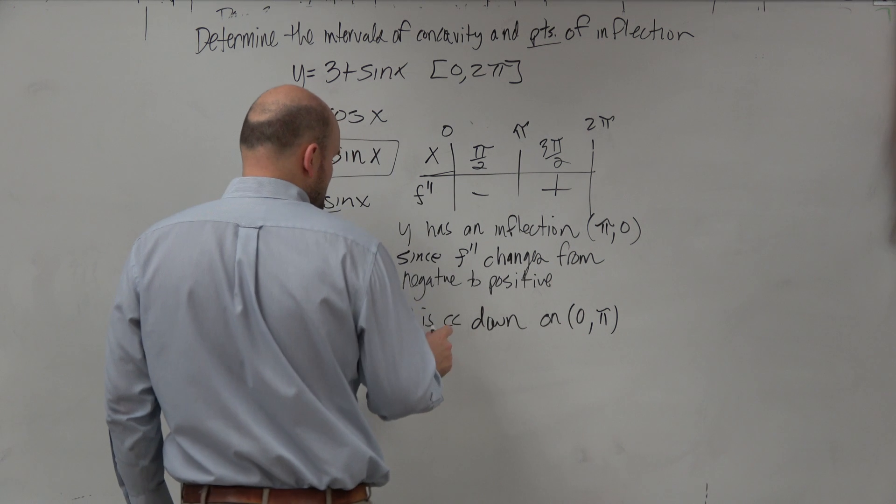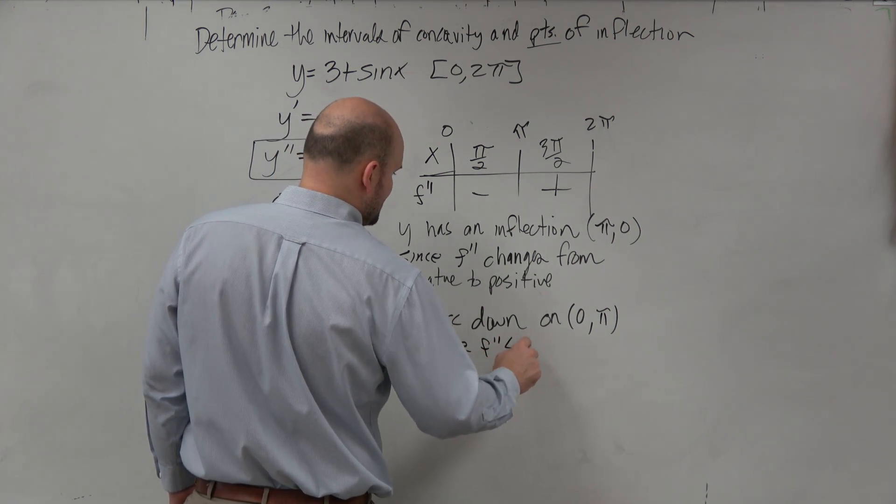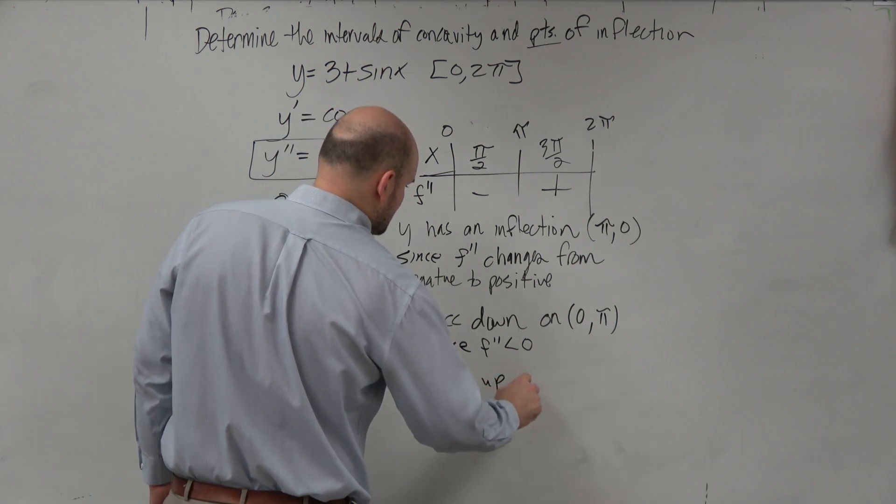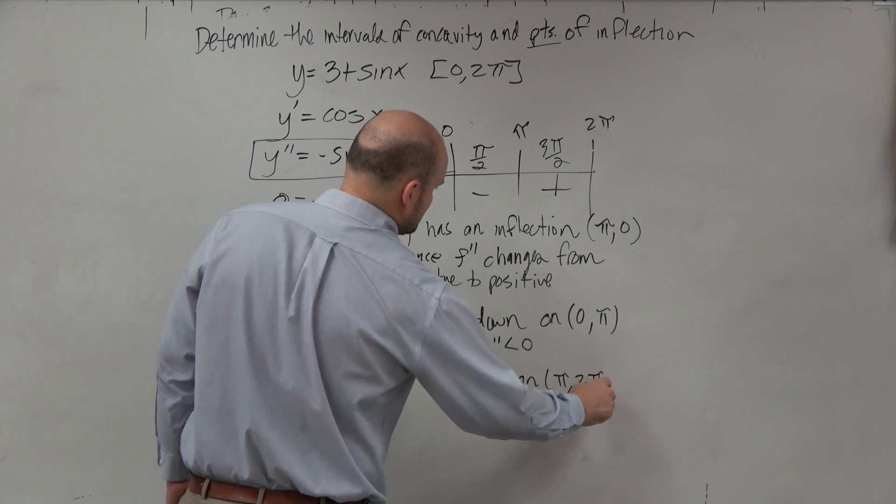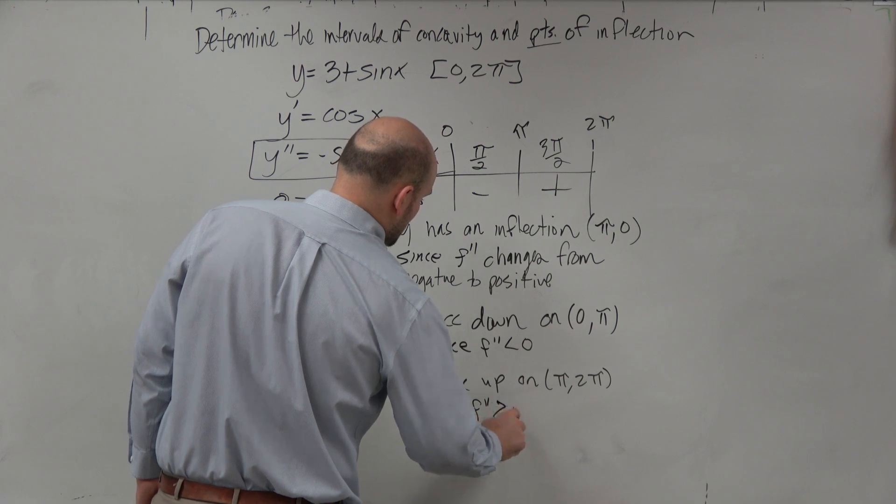F is concave down on 0 to pi. If you wanted to do a justification, we could say since f double prime is less than 0, and f is concave up on pi to 2 pi, since f double prime is greater than 0.